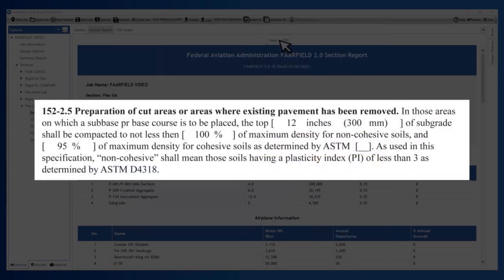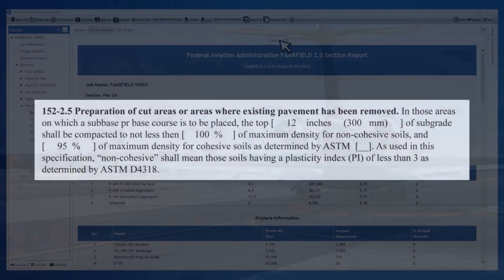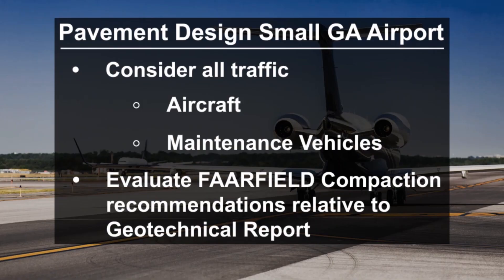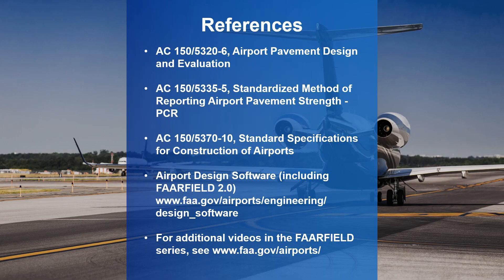However, in reviewing item P152, paragraph 2.5 of AC 150-5370-10, we see that the specifications recommend recompacting the top 12 inches of a cut. So, for our project, we will recommend recompacting the top 12 inches of a cut to 95% of the standard proctor. This also meets the recommendations of Farfield. In summary, in this example we have developed a flexible pavement design for a small GA airport considering both aircraft and maintenance vehicle traffic. We have also reviewed the compaction requirements as recommended by Farfield relative to the Geotechnical Report.